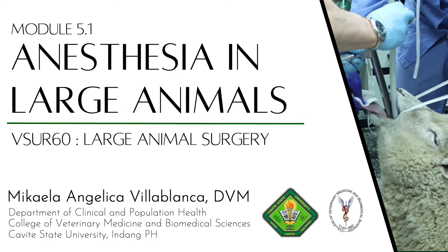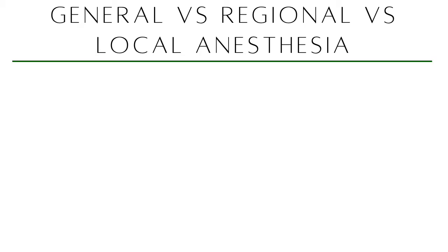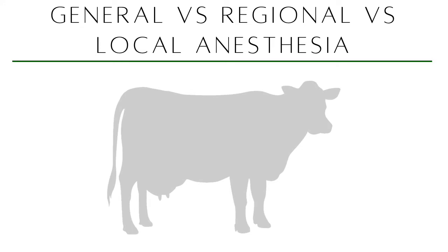The first thing we have to distinguish is the difference between general, regional, and local anesthesia — I believe you learned this already in pharmacology, so let's just review. If I give you a cattle to anesthetize for a flank laparotomy, in small animals we automatically induce general anesthesia: it's easy, they're small, and you need only a minimal amount of anesthesia to render them unconscious.